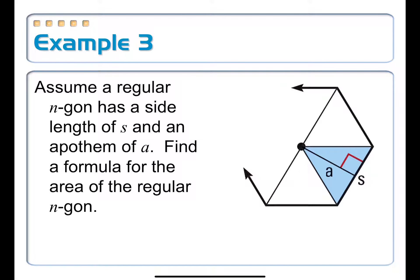The process to find the area of one of these polygons is to break it up into triangles by drawing in each of the radii. When you find the area of one triangle, you can multiply it by however many triangles are created. We have a generic n-gon where we don't know how many sides n actually is — with a side length of s and an apothem length of a — and we want to derive a formula for the area of this regular n-gon.